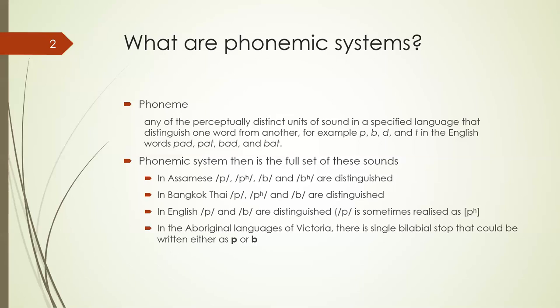In English, the p phoneme can be realized as aspirated p at the beginnings of words like 'pot' and 'pink,' but also unaspirated as in 'spot' or 'speed,' and these two are the same sound in the minds of English speakers. Assamese speakers, however, distinguish aspirated from unaspirated on every occasion. In the Aboriginal languages of Victoria, which I also research, there's just a single bilabial stop that could be written as either p or b. So across these four languages you can have a distinction of four bilabial stops as in Assamese, three as in Bangkok Thai, two as in English, and just one as in the Aboriginal languages of Victoria.